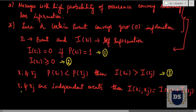Observation four: if there are two events x_i and x_j that are independent — meaning there is no dependency between them — then the self-information of (x_i, x_j) is equal to the sum of the self-information of x_i and the self-information of x_j.